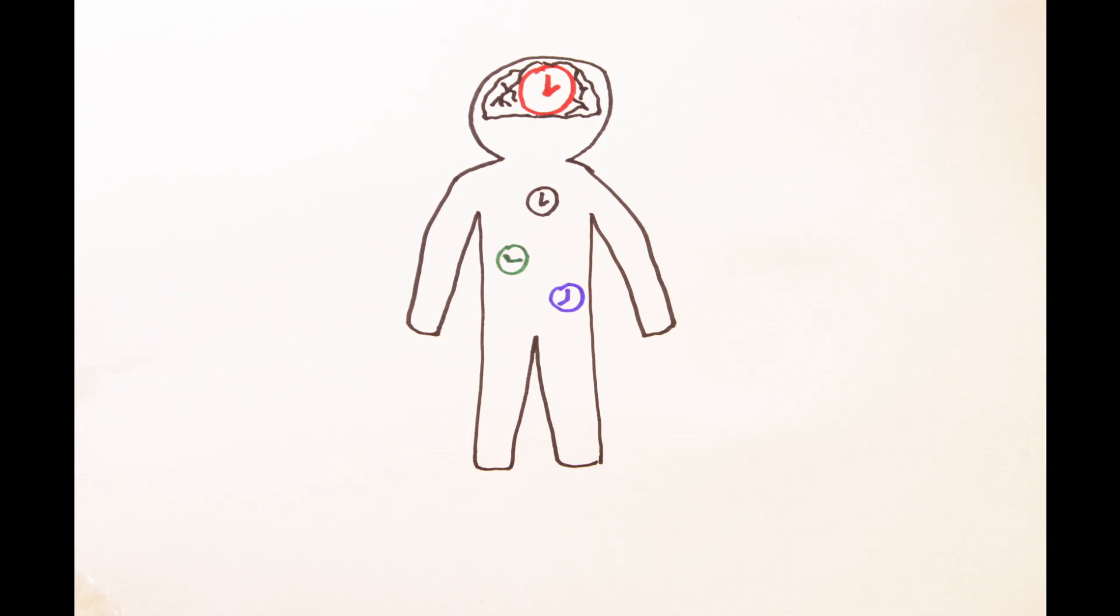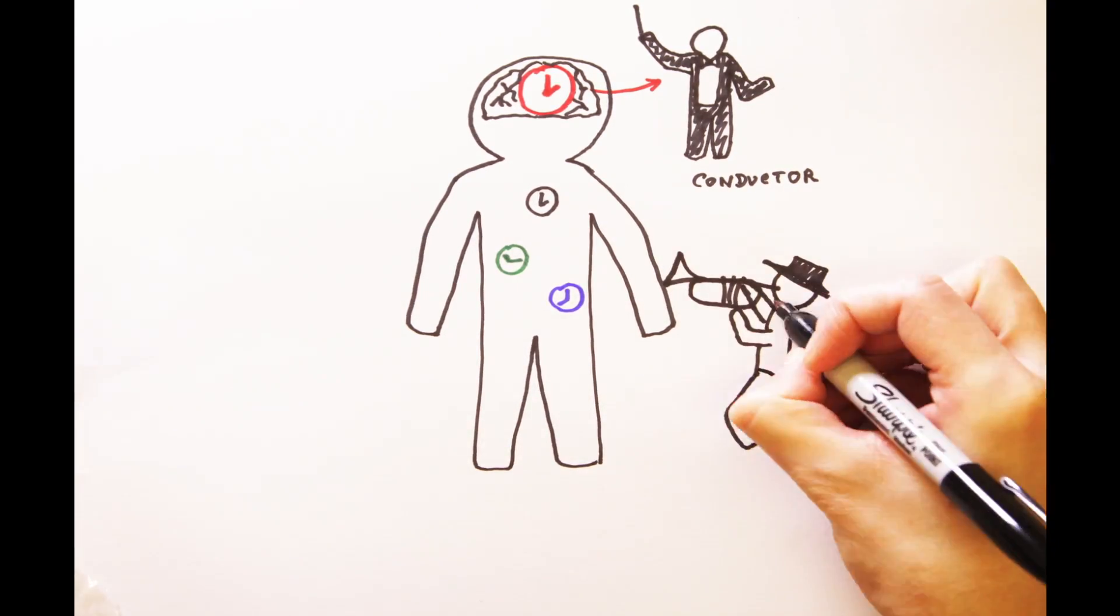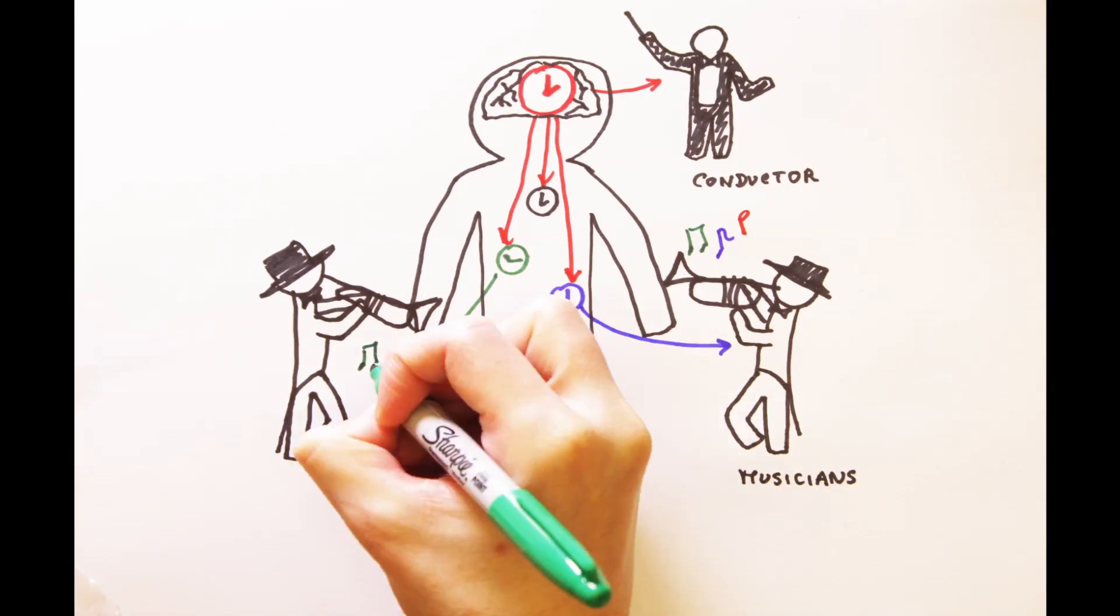However, it is the brain that keeps ourselves in sync with the environment. Think of the body like an orchestra. Each musician has the ability to create music. However, without the conductor, the musicians will likely play out of time with each other.